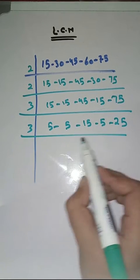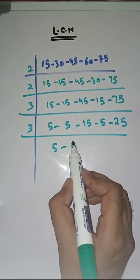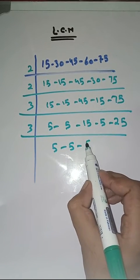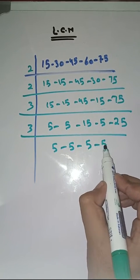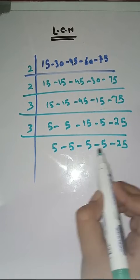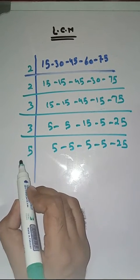Again with 3: 5 as it is, 3 5s are 15, 5 as it is, 25 as it is.